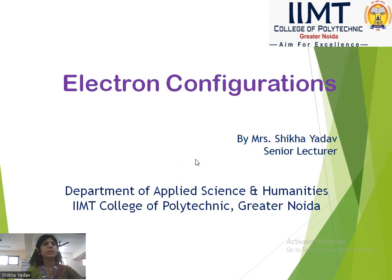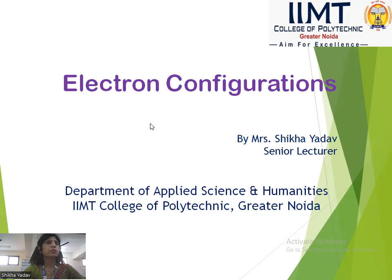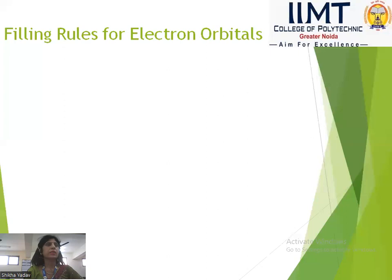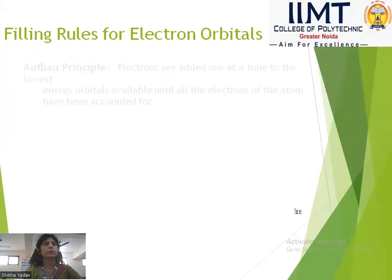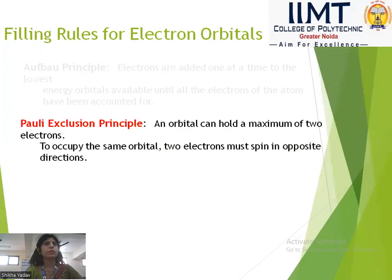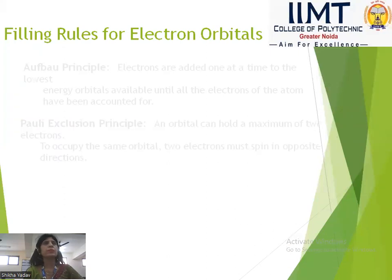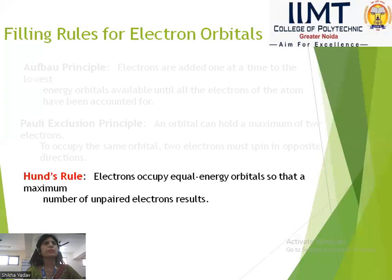What is electronic configuration? The distribution of the electrons in different orbitals is known as the electronic configuration of the atoms. There are so many principles regarding this.